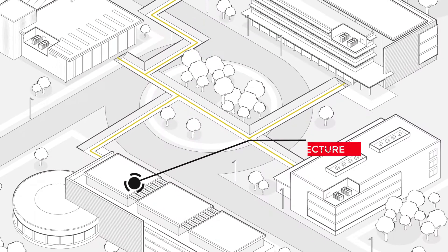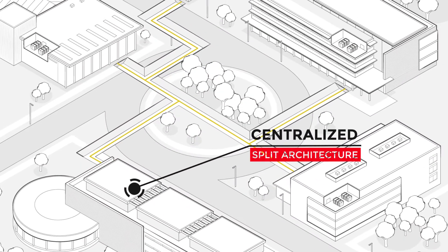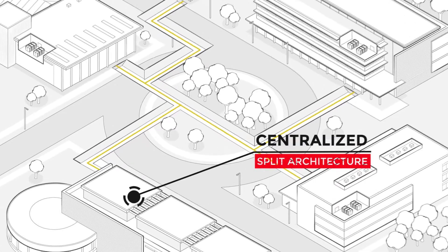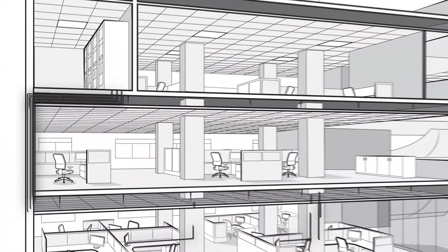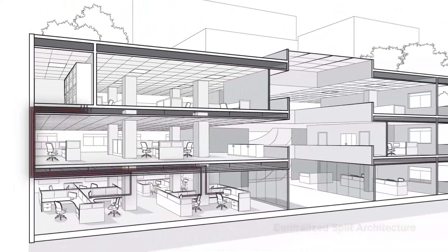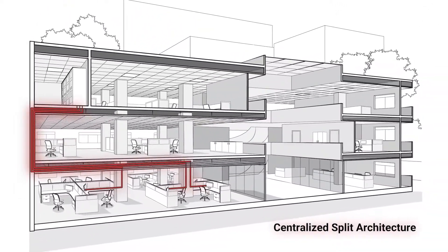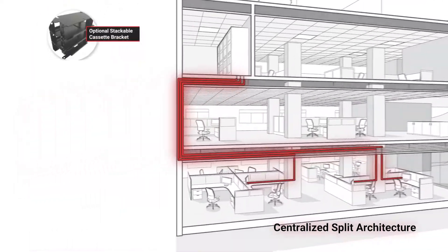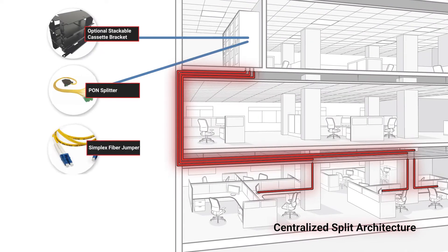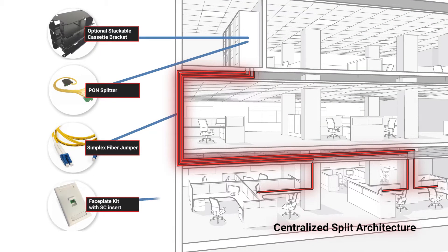The centralized split architecture works well in retrofit installations, where a telecommunications room or rack is already located near the users and is being reused as a telecommunications room. This location may be near the OLT or other active hardware. Individual simplex fiber-optic cables connect this centralized location to each ONT throughout the building.